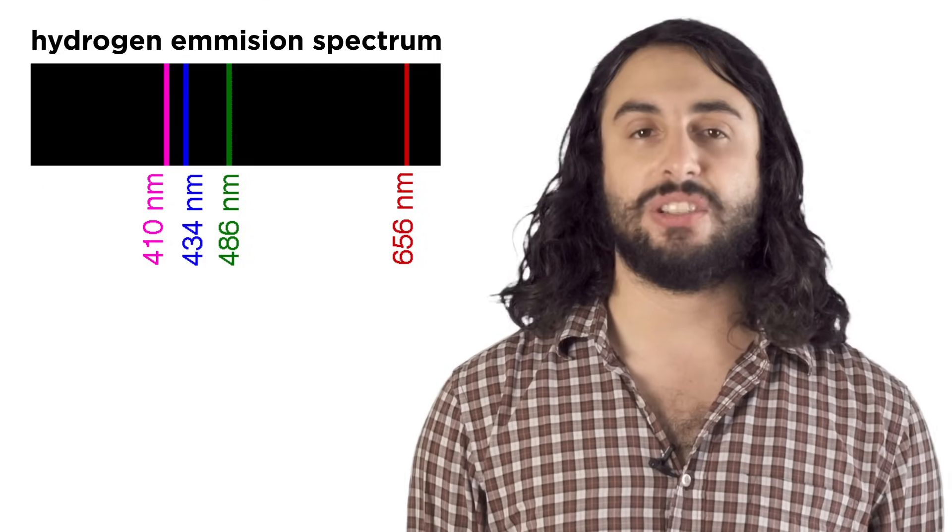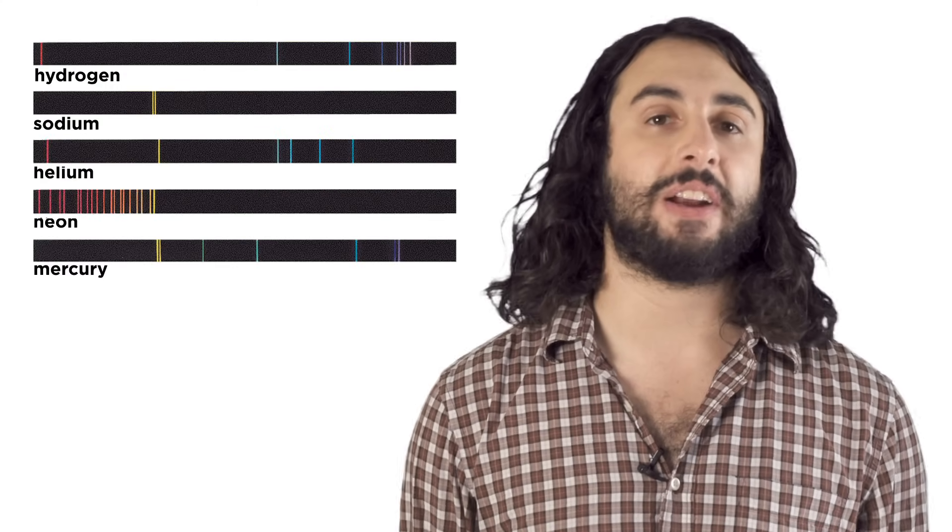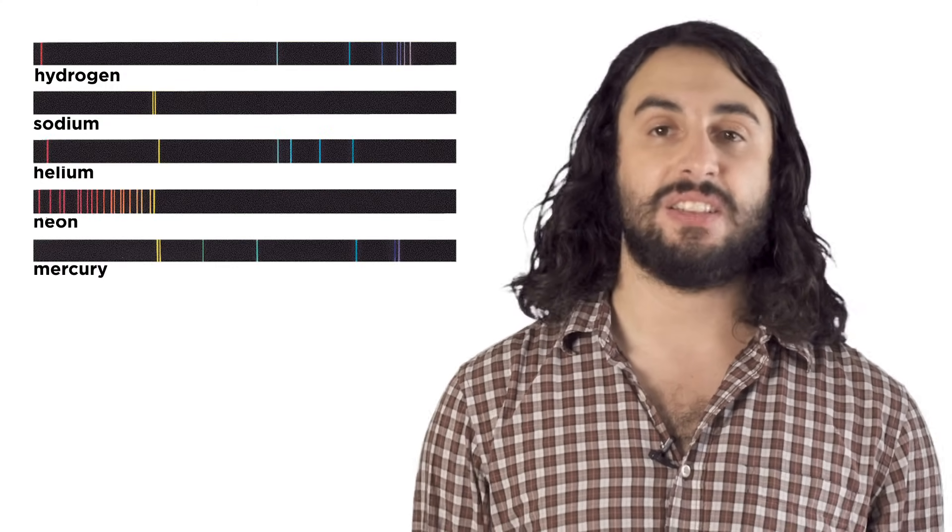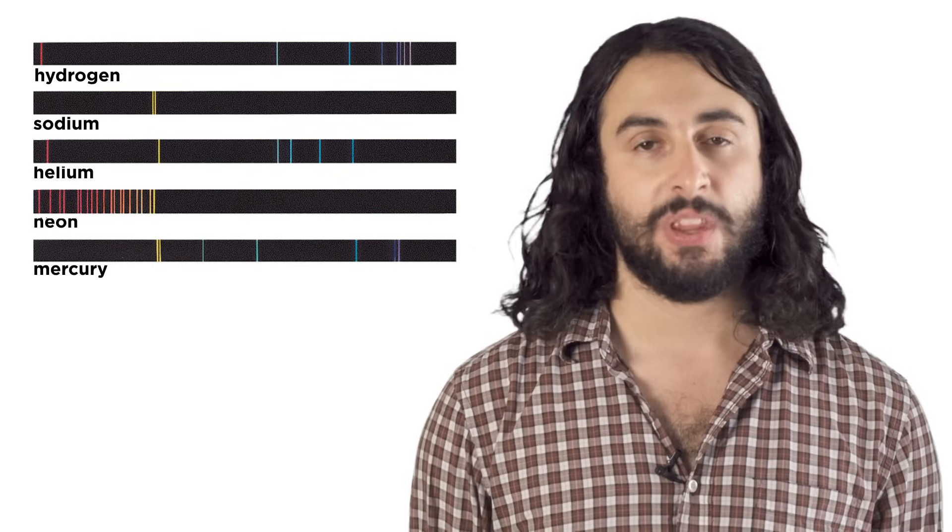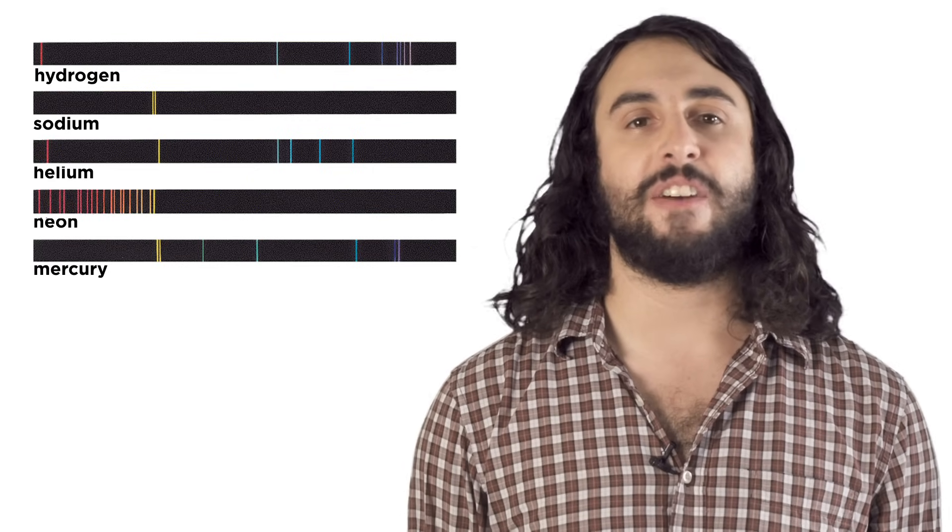As we said these energies are unique to hydrogen. Every element will have its own emission spectrum because every element has a unique nucleus and therefore differently spaced energy levels. In this way an element's emission spectrum is sort of like a fingerprint unique to that element. This is how we can know the composition of objects in space, by analyzing the light we see.